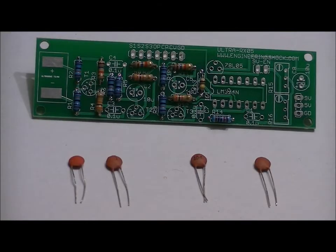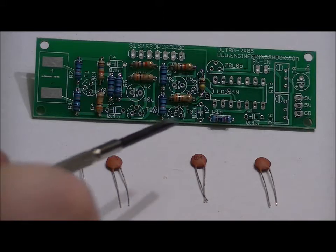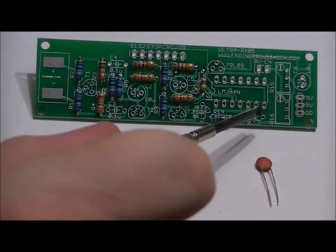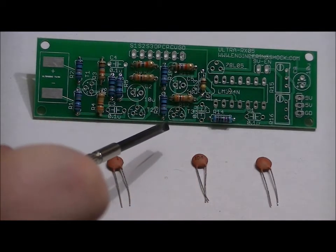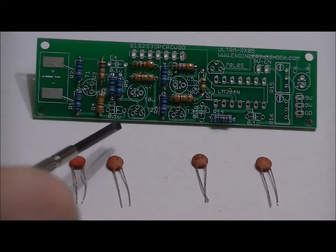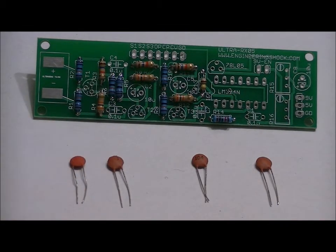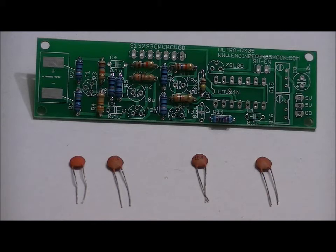The ceramic capacitors have no positive or negative, they are not polarized, so we can solder them directly into the correct slots very easily. Right here, C7, C1, C4, and C3. Solder them into place, and next we will solder in our headers.